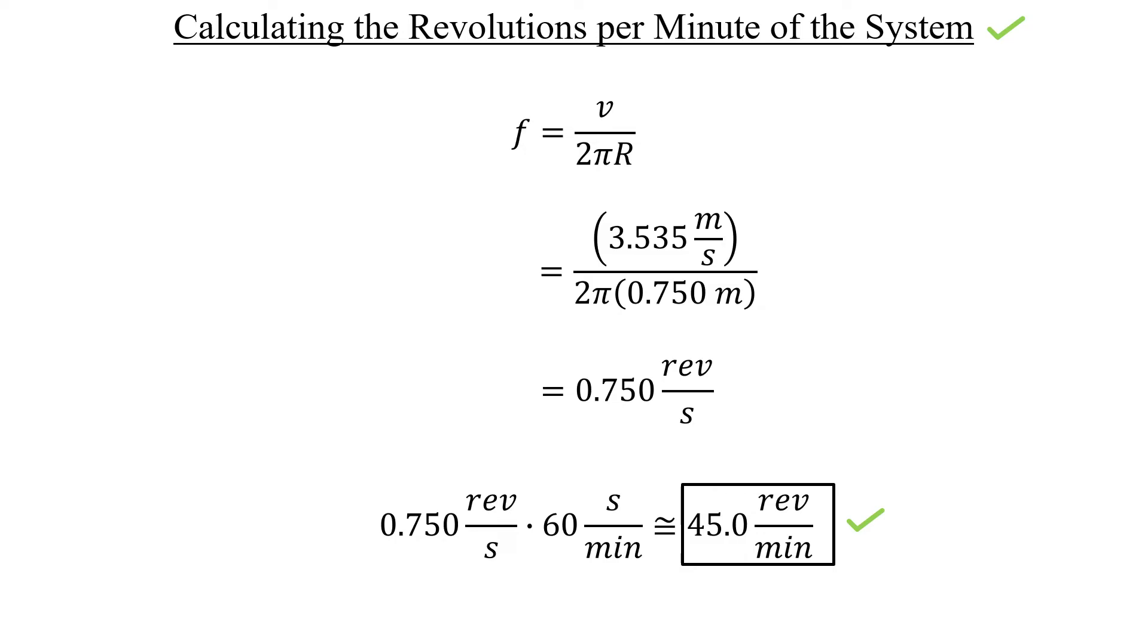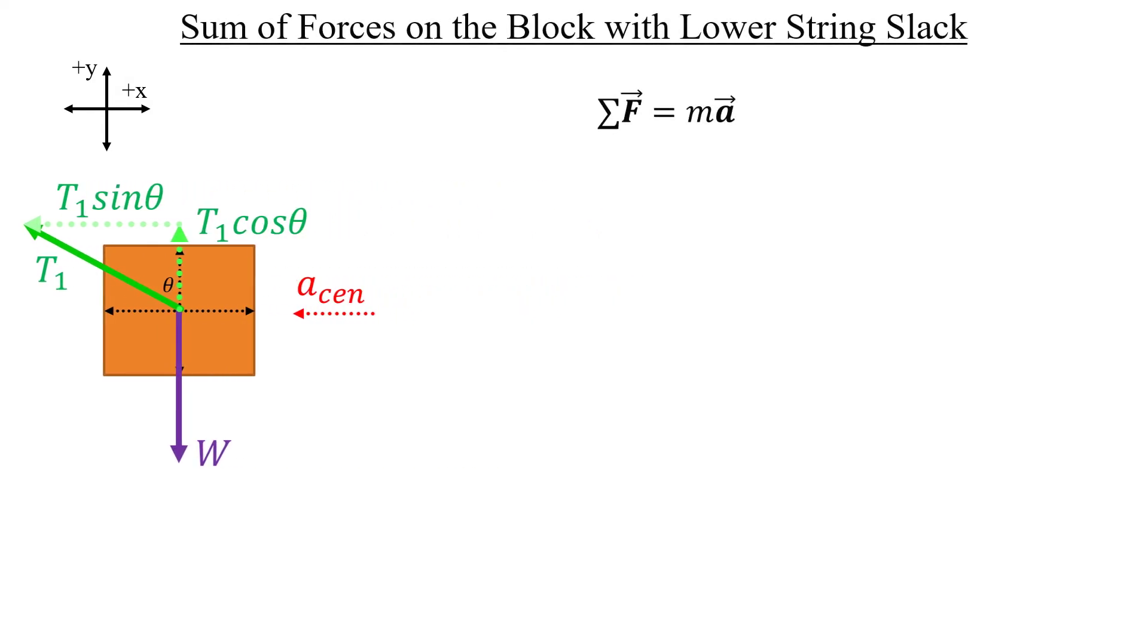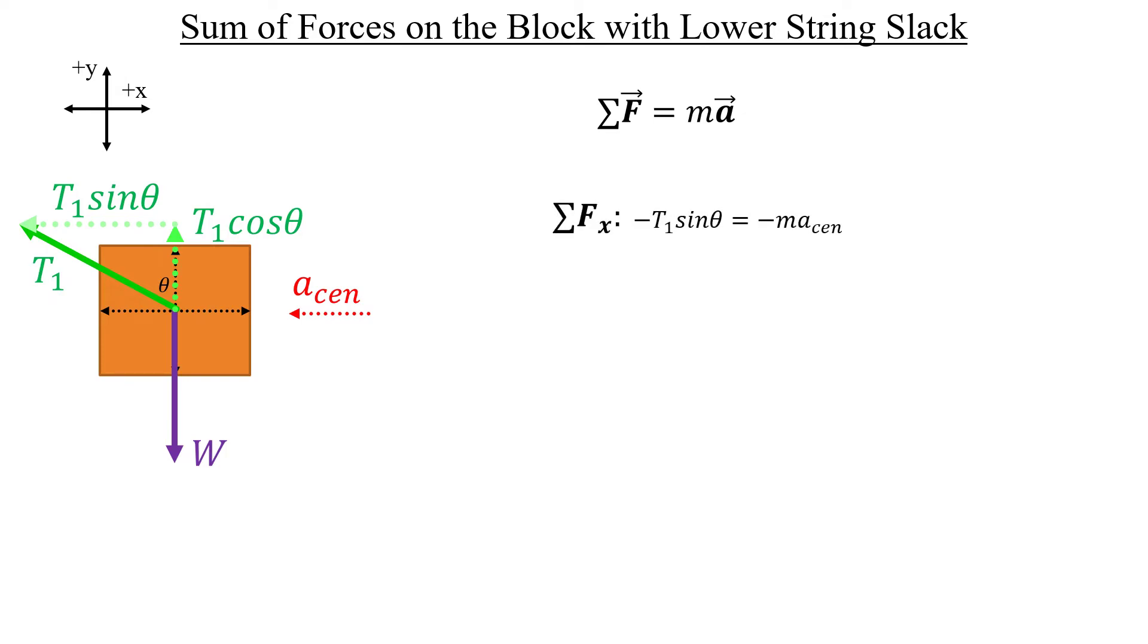For part C, we need to return to the free body diagram drawing board and eliminate T2. We've snipped the string, so the tension no longer exists there anymore, along with its components. Every other vector remains, though. So going through this whole process of labeling the vectors really isn't necessary. That's the only change. This change will, of course, alter our sum of forces expressions, as you might expect. The sum in the x-direction only has two terms now, and both are negative, like we had in the previous version. Since we know the process for getting the revolution frequency now, which involves solving for v again, let's get ahead of the curve and multiply both sides by negative 1 right away, like this.